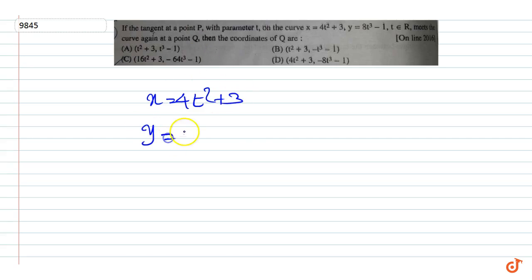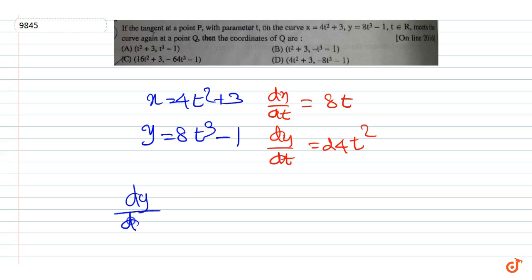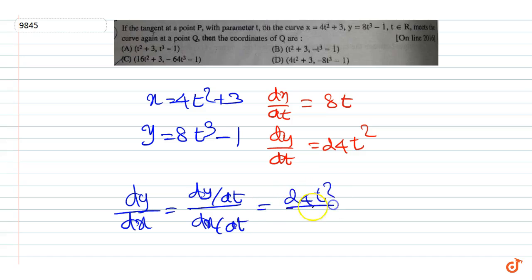And y is equal to 8t cubed minus 1. Now dx by dt is equal to 8t and dy by dt is equal to 24t squared. Therefore dy by dx equals dy by dt upon dx by dt, equal to 24t squared upon 8t, which is equal to 3t.